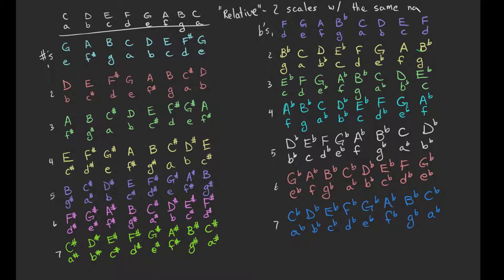Let's look at another example. G major has G A B C D E F# and G. E natural minor has the same notes: G A B C D E F# and G. The notes are exactly the same — this one is starting on G and this one's starting on E. That's true for all of these pairs, so they're all relative.